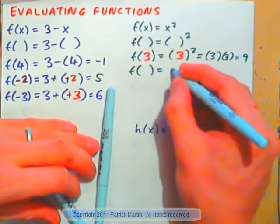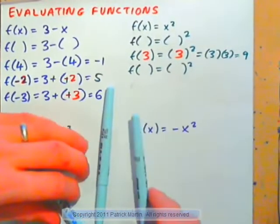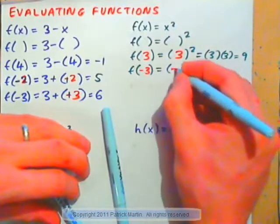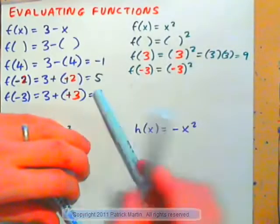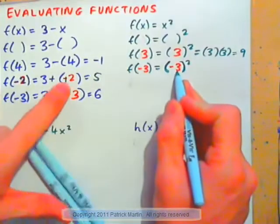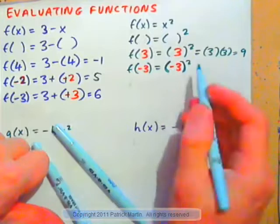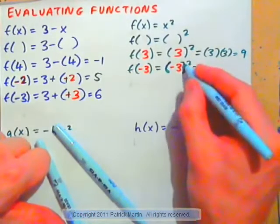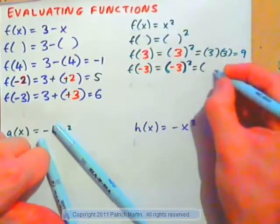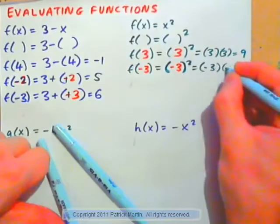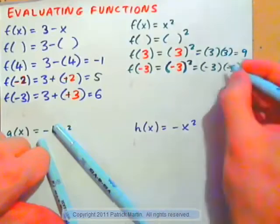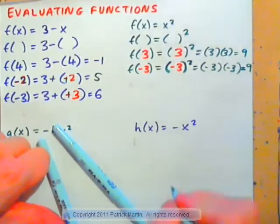f of parentheses equals parentheses squared. So, what is f of negative 3? It's negative 3 in parentheses, all squared. That's why we always use parentheses — to deal with these negative numbers. The negative is contained in parentheses, the squared is beside the parentheses. So, that's parentheses times parentheses: negative 3 times negative 3, and the answer is positive 9.